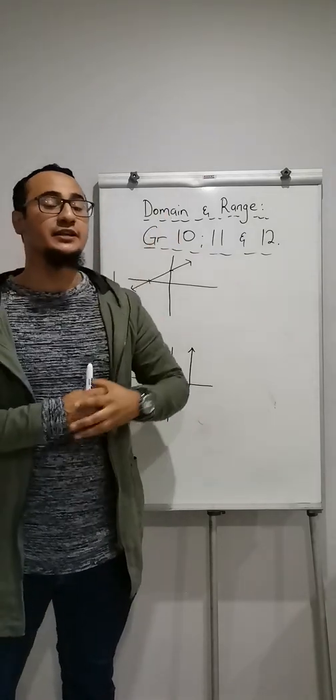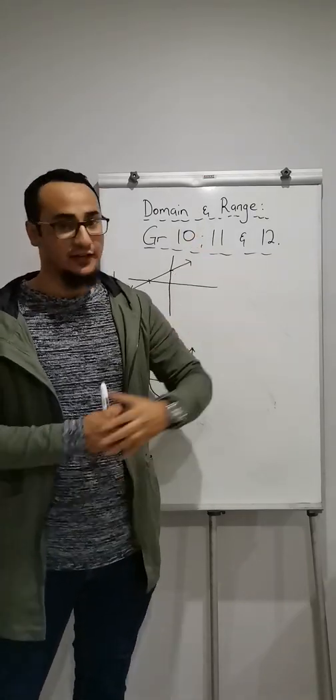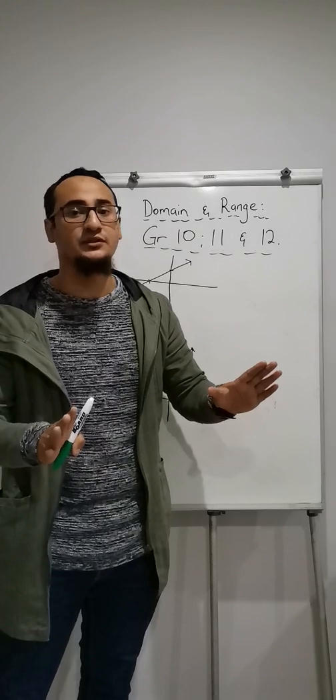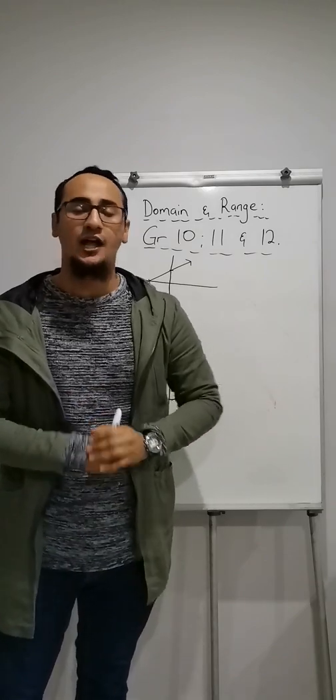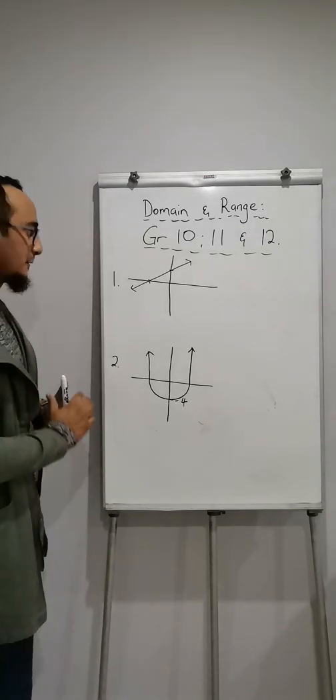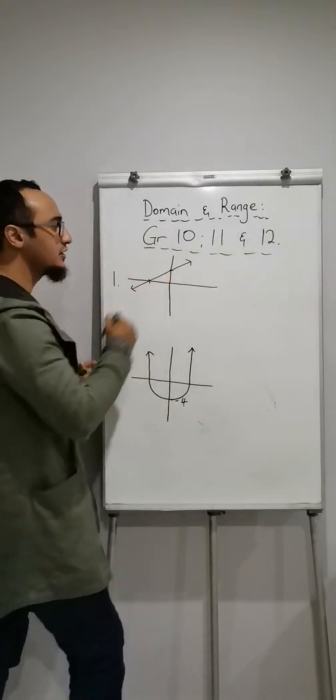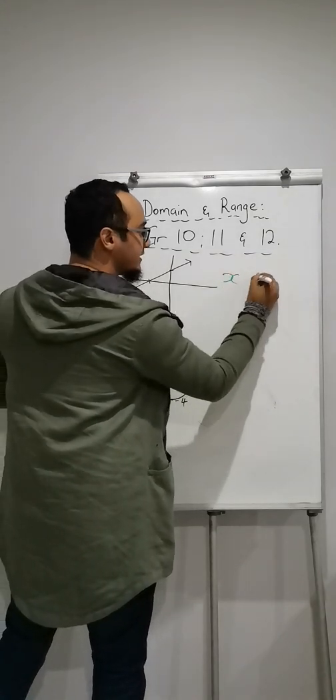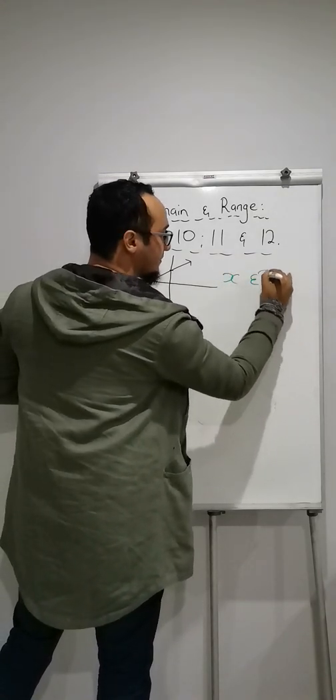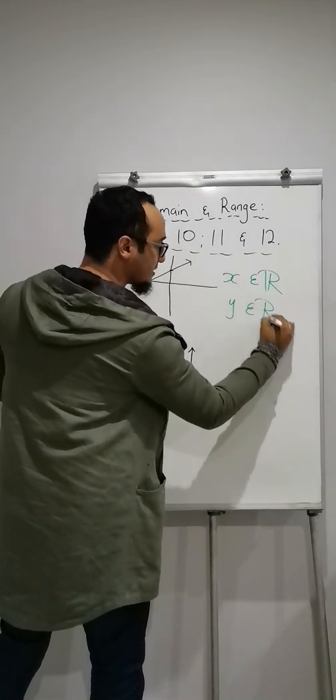Domain means all possible x values and range means all possible y values. That's the surface definition of it. I'm not going to go into detail, however, I'm going to show you how to get to your answers. So first thing is the straight line. What is the domain of it? It will be x is an element of real numbers. What is the range? Y is an element of real numbers.